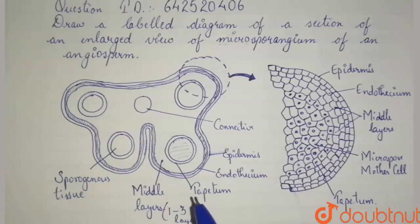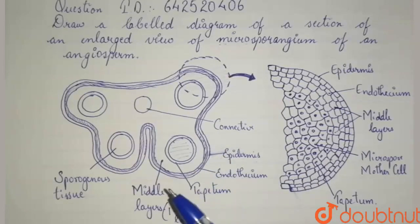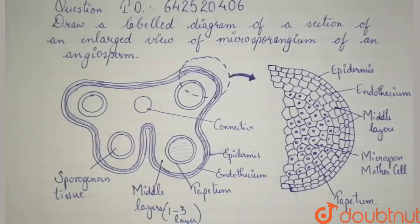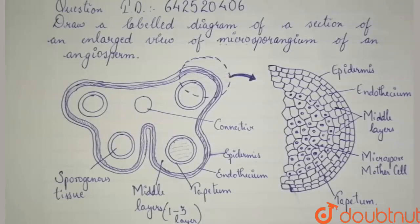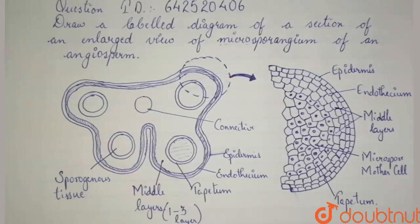What is a microsporangium? We have to know that pollen grains are referred to as microspores. Therefore, microsporangium is a structure which bears microspores. Therefore, microsporangium is the structure which bears the pollen grains.